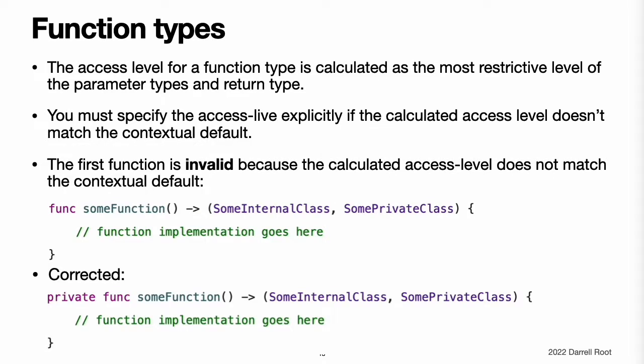Function types. The access level for a function type is calculated as the most restrictive access level of the function's parameter types and return type. You must specify the access level explicitly as part of the function's definition if the function's calculated access level does not match the contextual default. The example below defines a global function called some function without providing a specific access level modifier for the function itself. You might expect this function to have a default access level of internal, but this is not the case. In fact, some function will not compile as shown here.